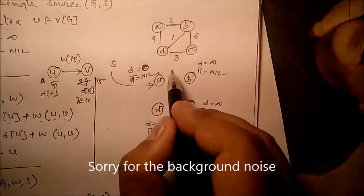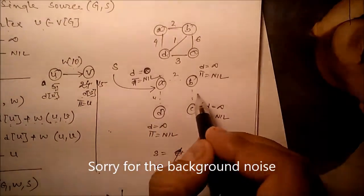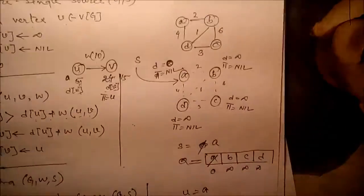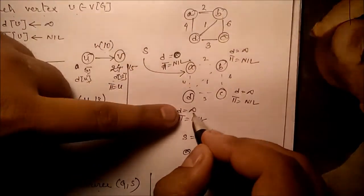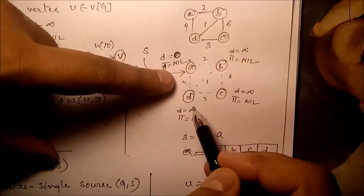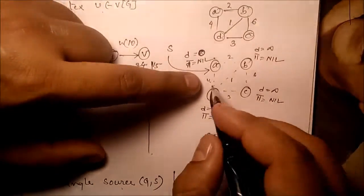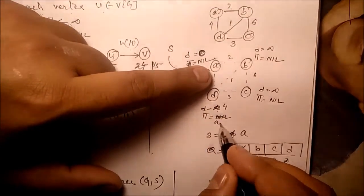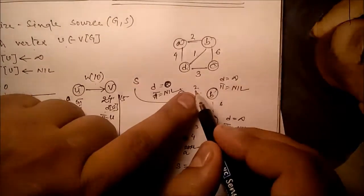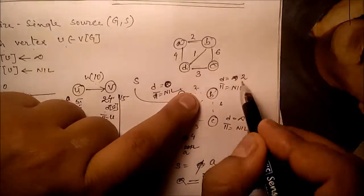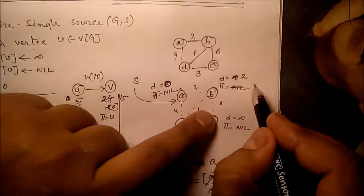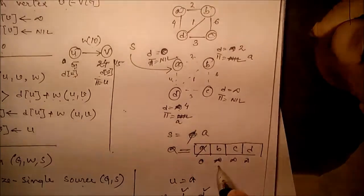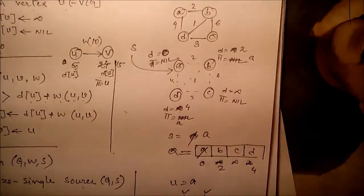The weights are 2, 4, 6, 3, 1. Initially d[b] and d[d] are infinite. Comparing infinite with 2: d[b] becomes 2, parent[b] = a. Comparing infinite with 4: d[d] becomes 4, parent[d] = a.